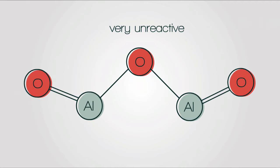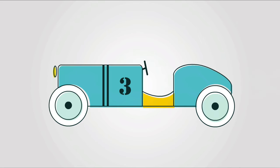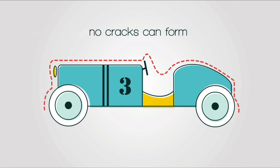Aluminium oxide is very unreactive because once the oxide layer is formed on the surface, it binds very tightly to the surface of the metal, so no cracks can form and cause further corrosion.